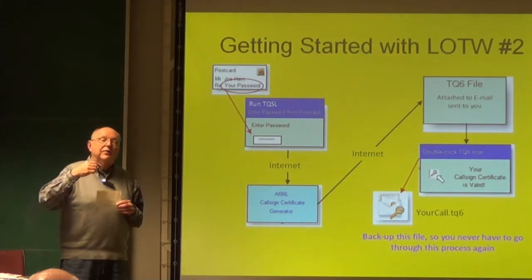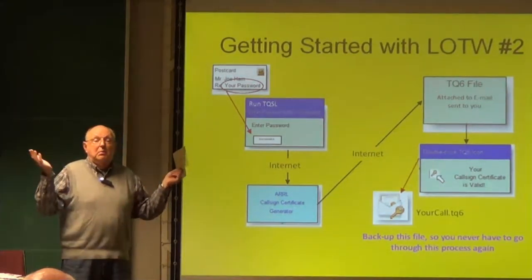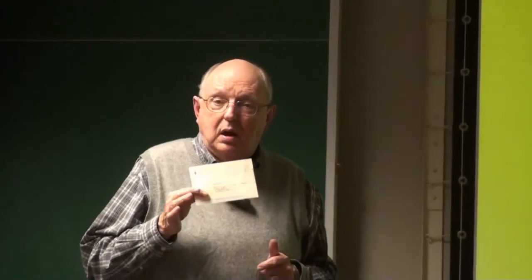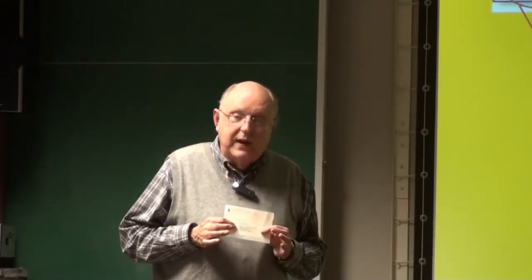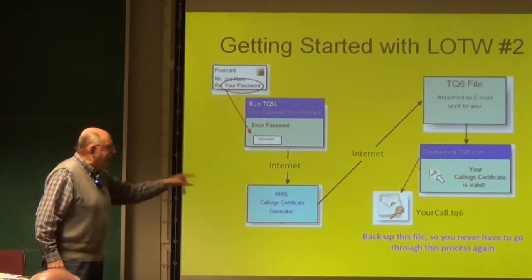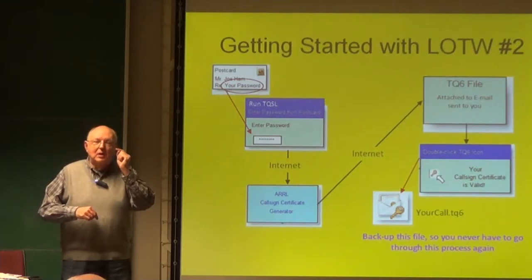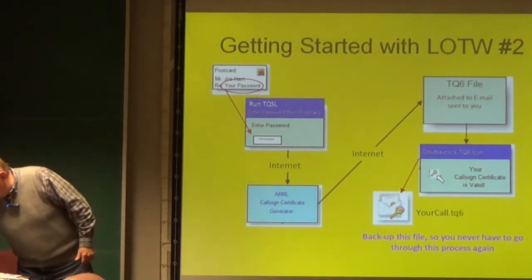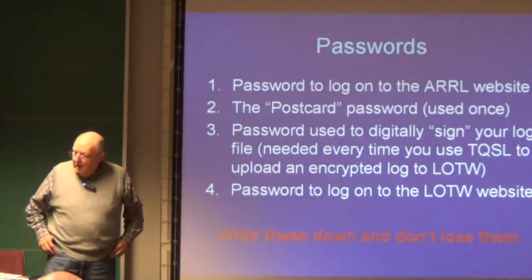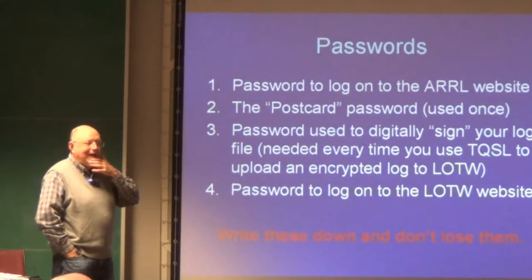It takes a few steps and a few days — you've got to wait for the postcard to arrive. They do this because they don't want somebody requesting a certificate in your name and having it sent to them while you're oblivious. They mail the postcard to your FCC address to make sure they're communicating with the right individual. Back up the TQ6 file — that's what you need to encrypt all your logs.